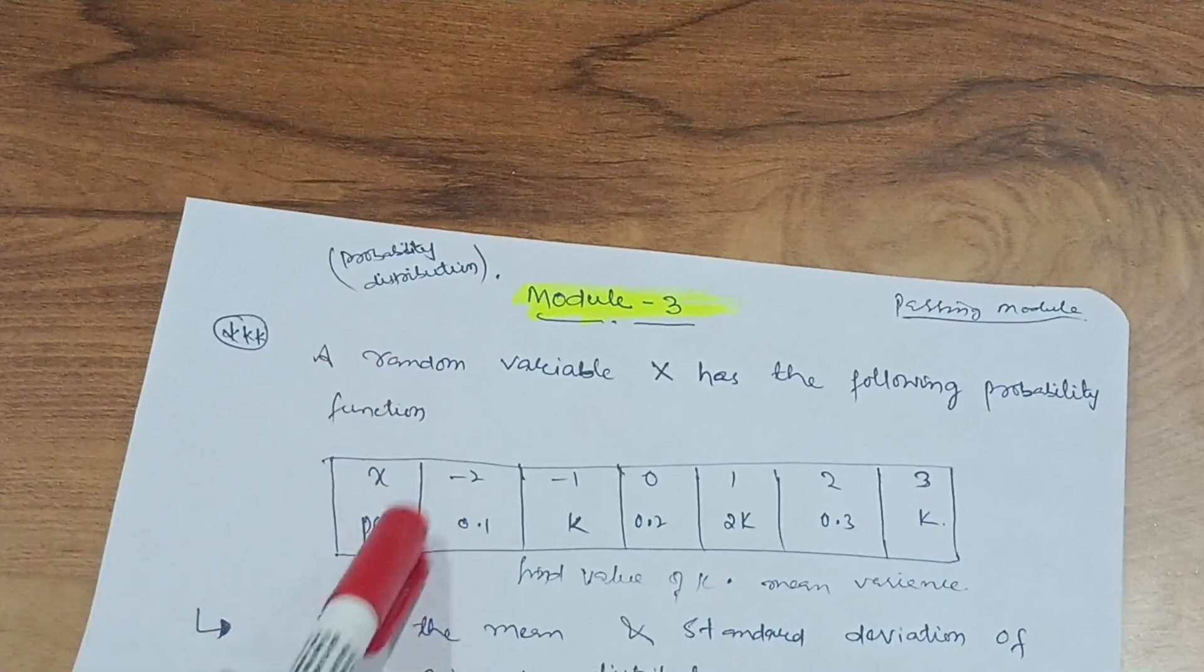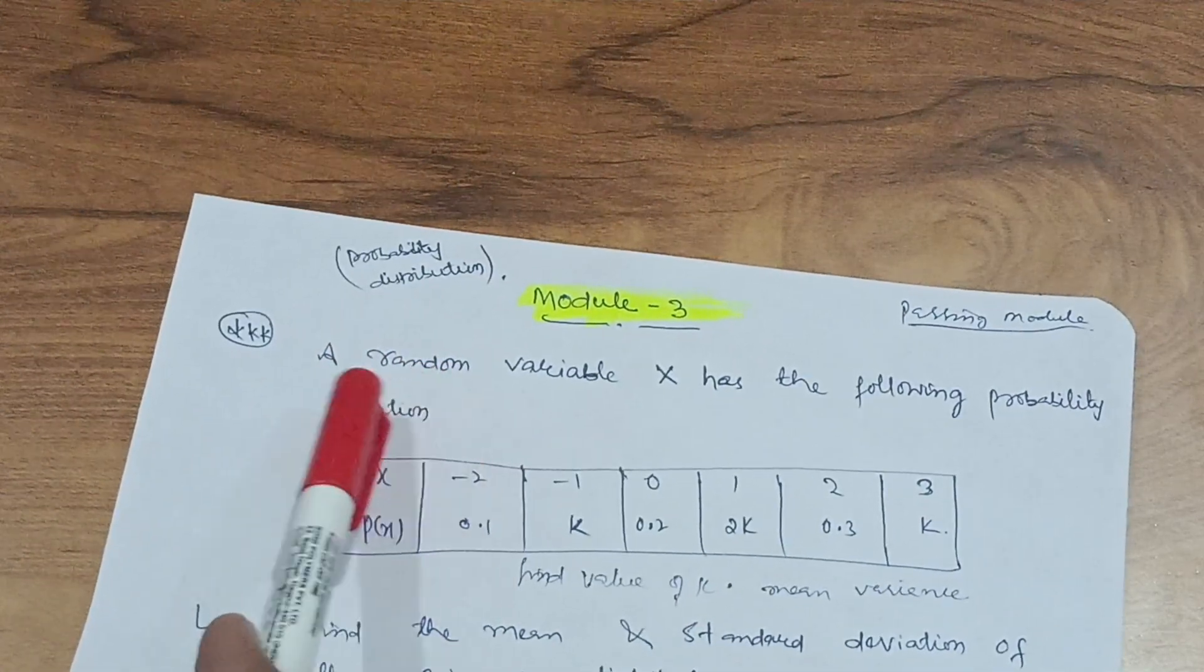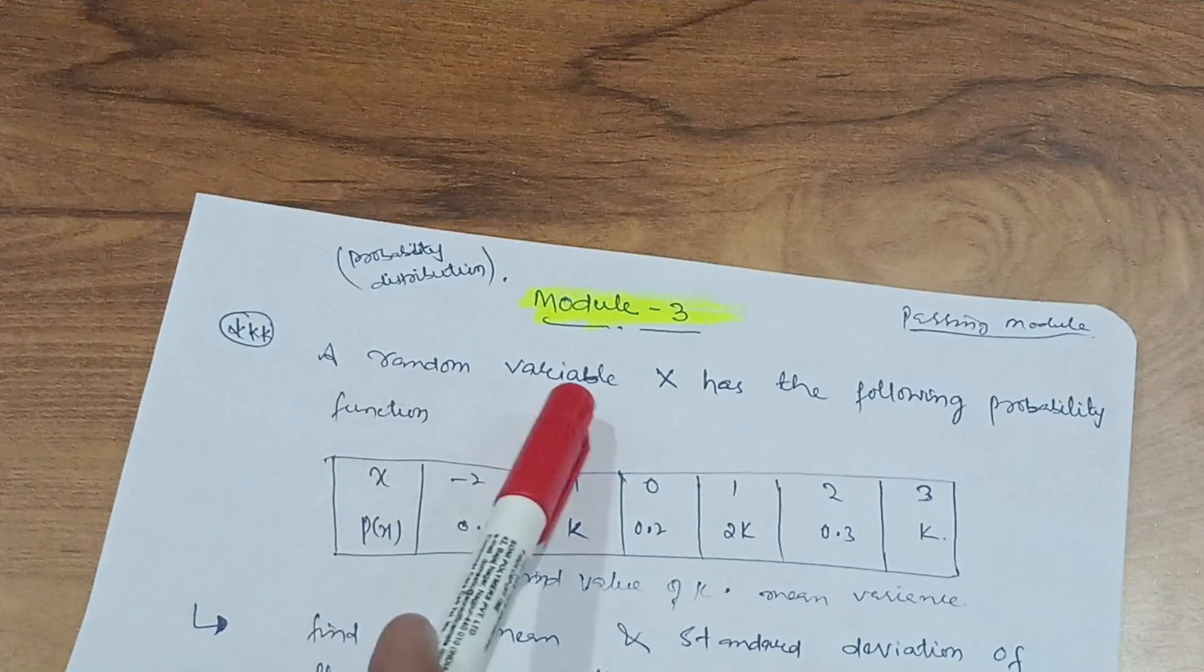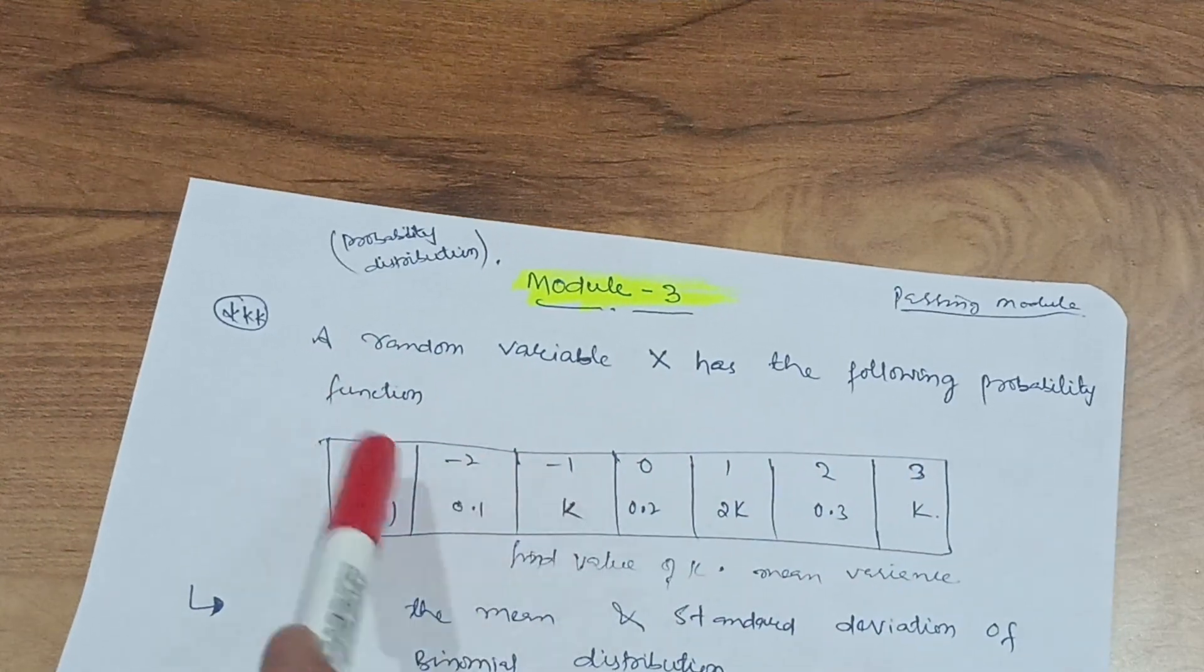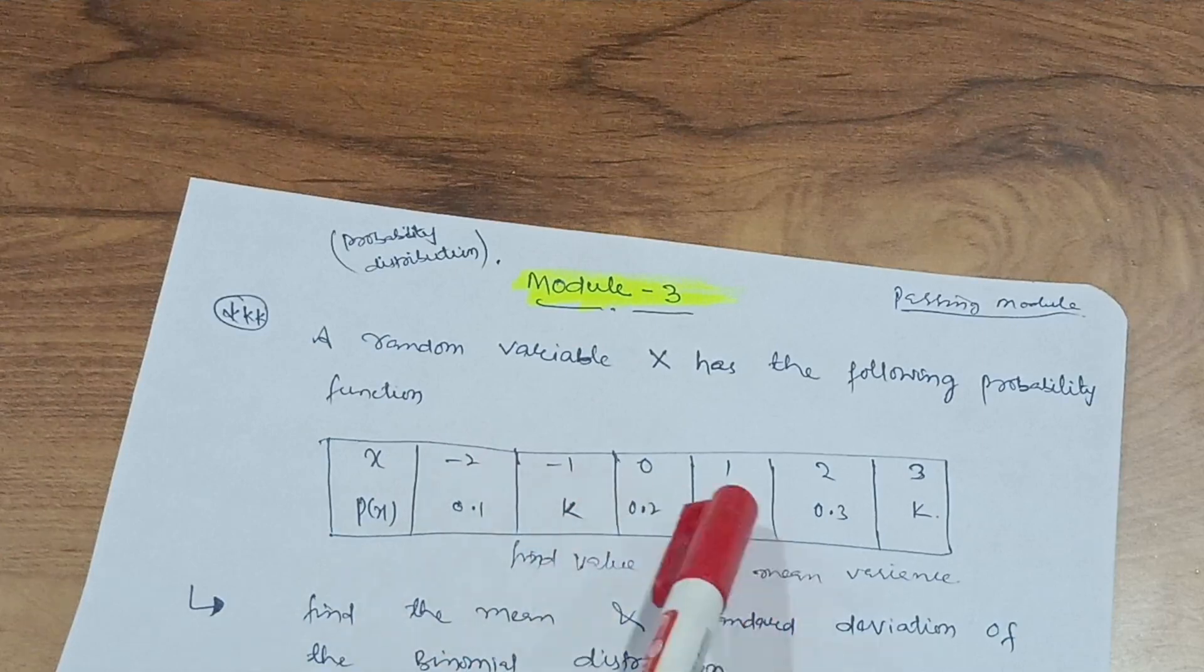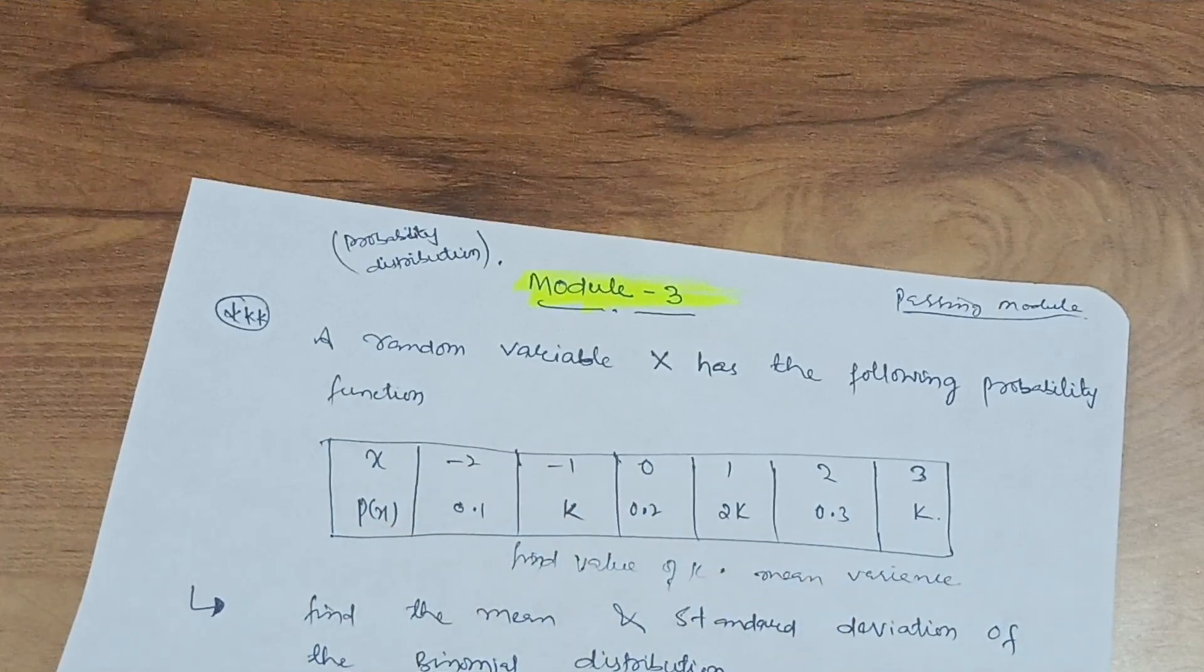Next one, which is also a passing module, is probability distribution. There will be questions on random variable. Suppose they will give you the question: a random variable X has the following probability function. Function will be given like X = -2, -1, 0, 1, 2, 3, P(X) is 0.1...